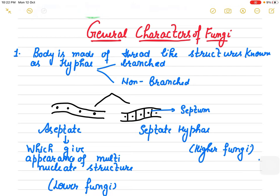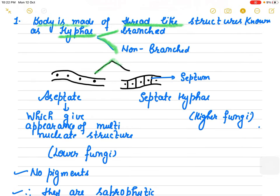If we talk about the general characteristics of fungi, the body is made up of thread-like structures and these thread-like structures are known as hyphae. This can be branched or non-branched. On the basis of hyphae there are further two types: it can be septate or aseptate. If this is one hyphae and it has septa, it is uninucleate, but when there is no septa, this aseptate gives the appearance of a multinucleate structure.